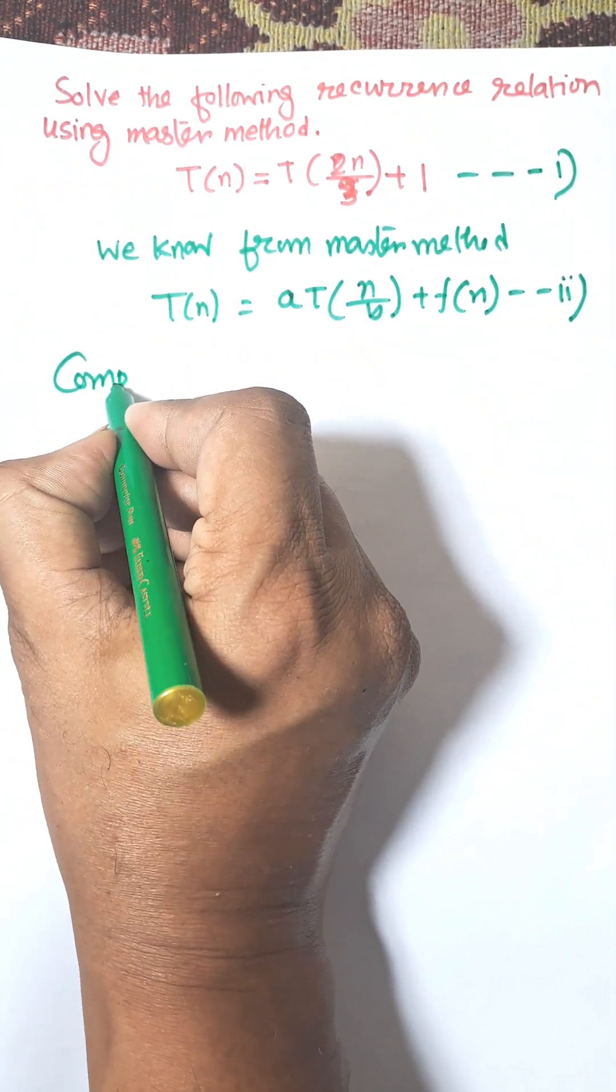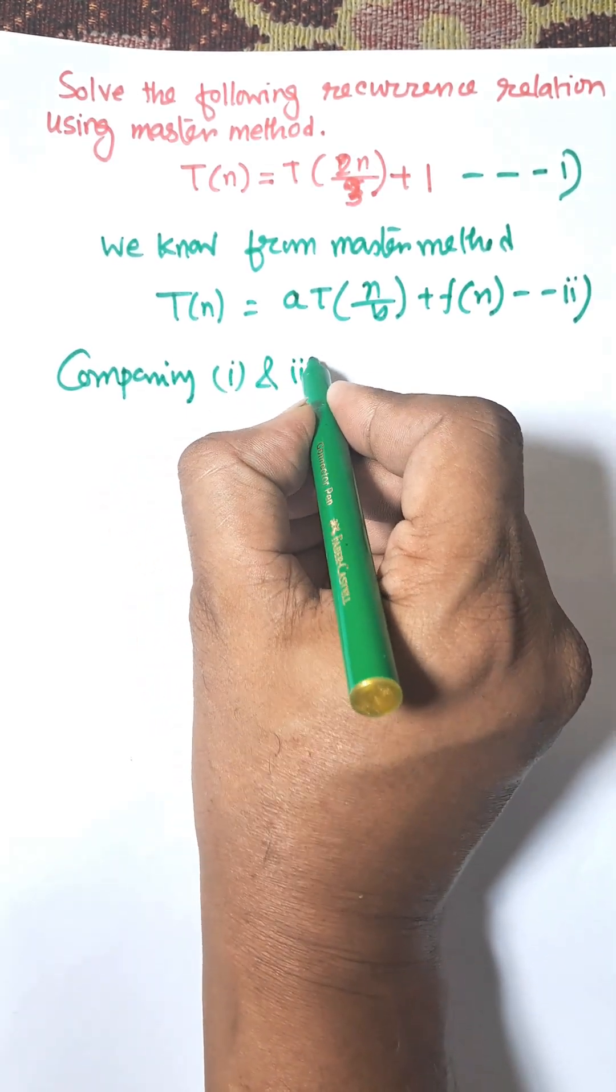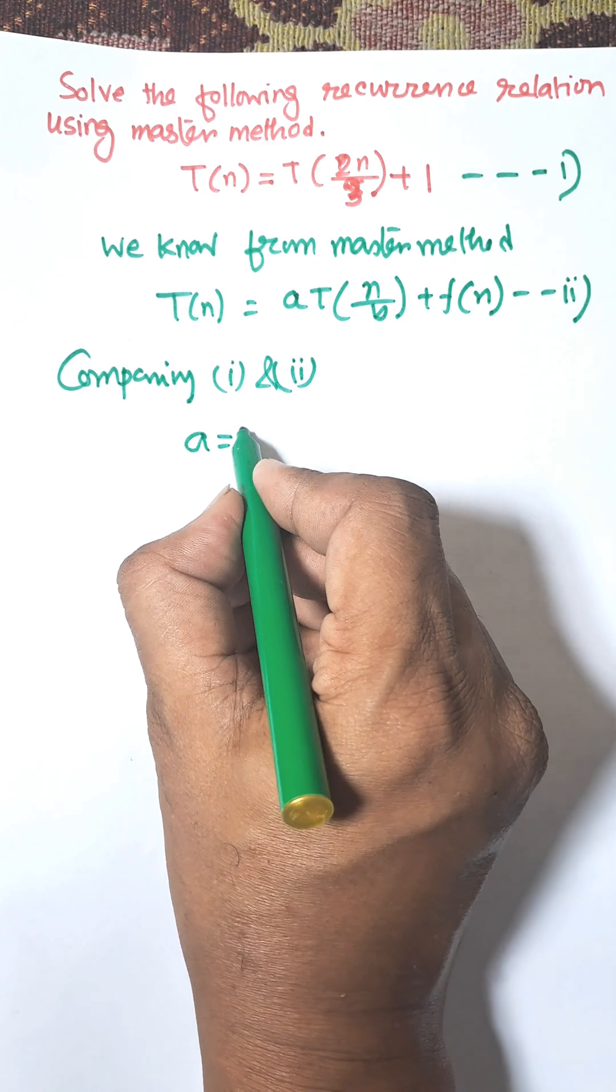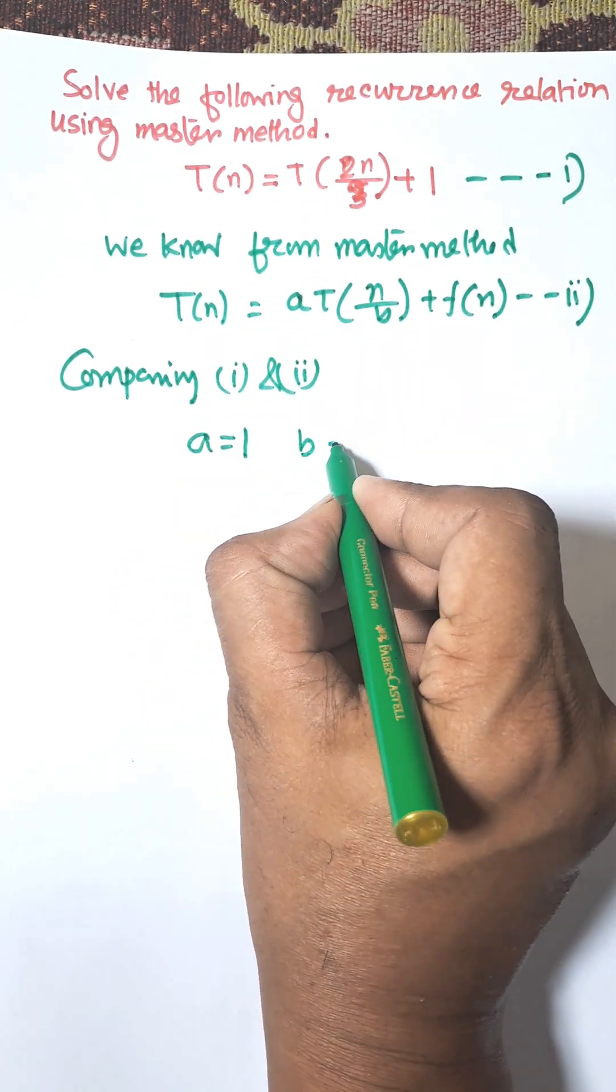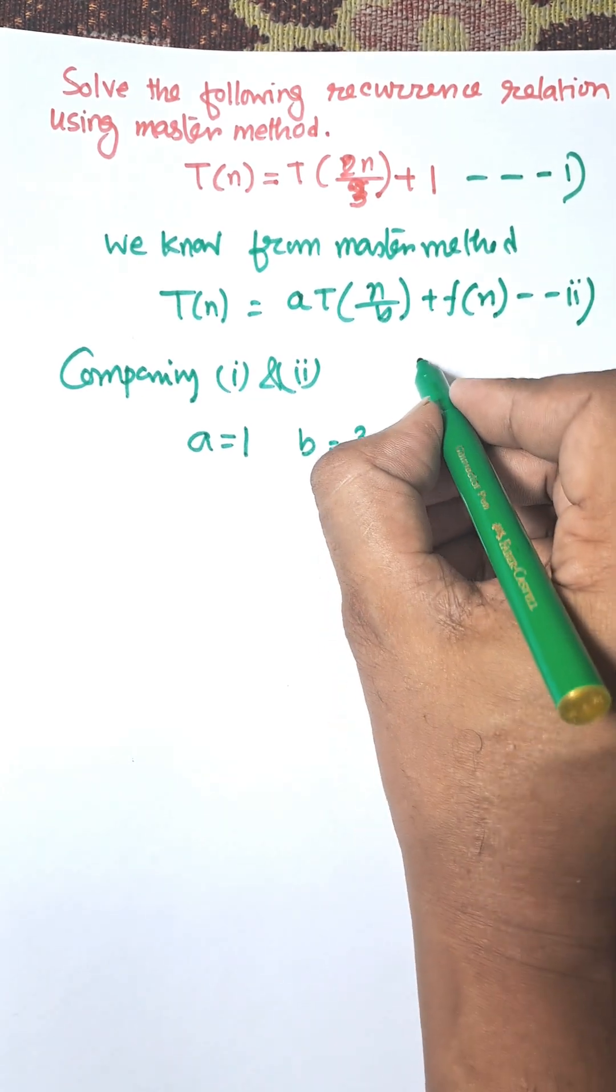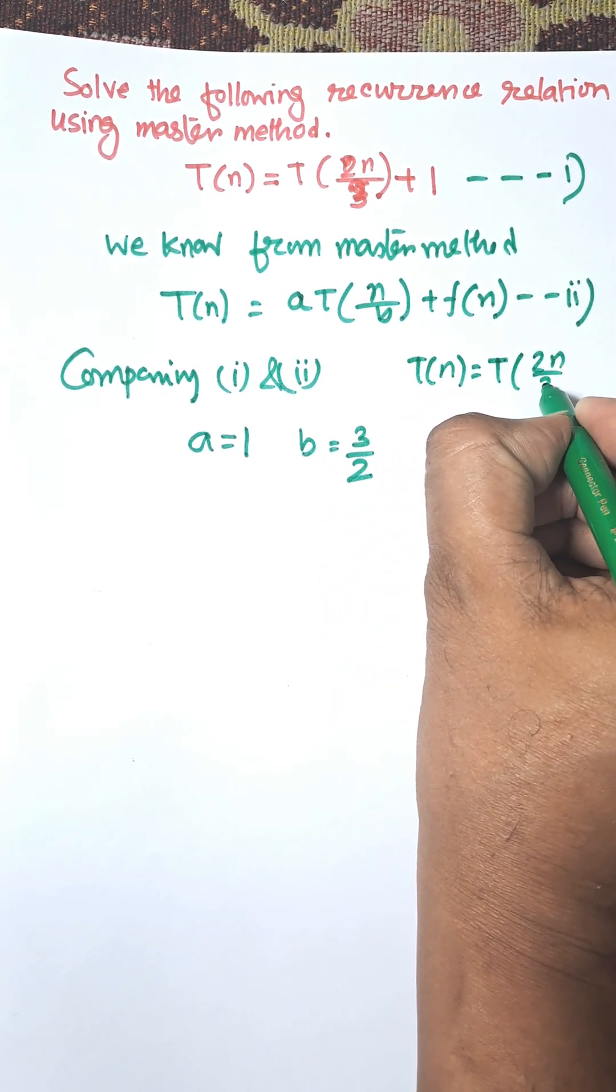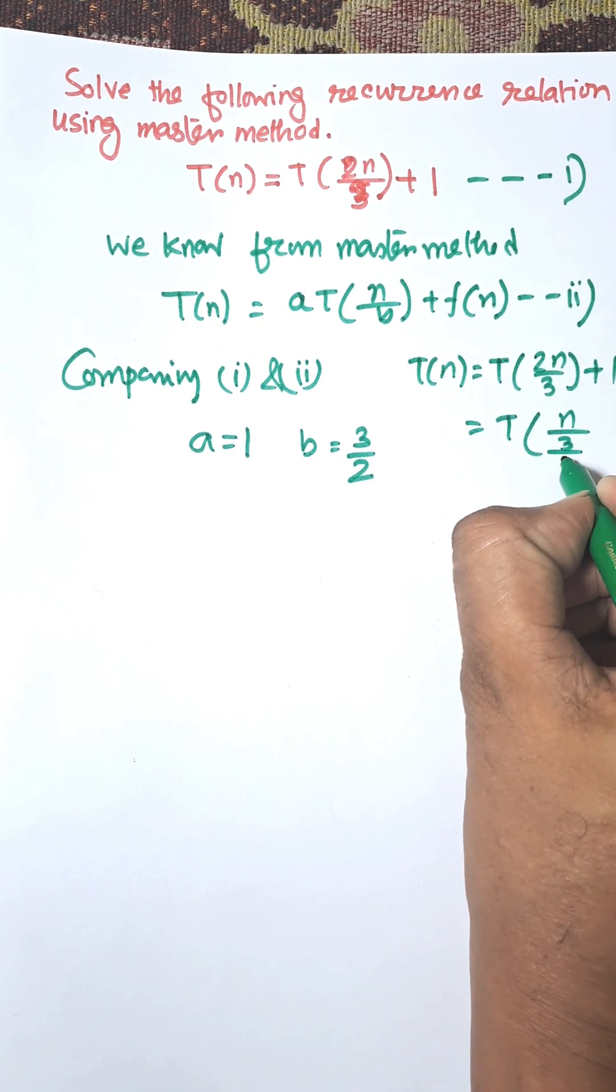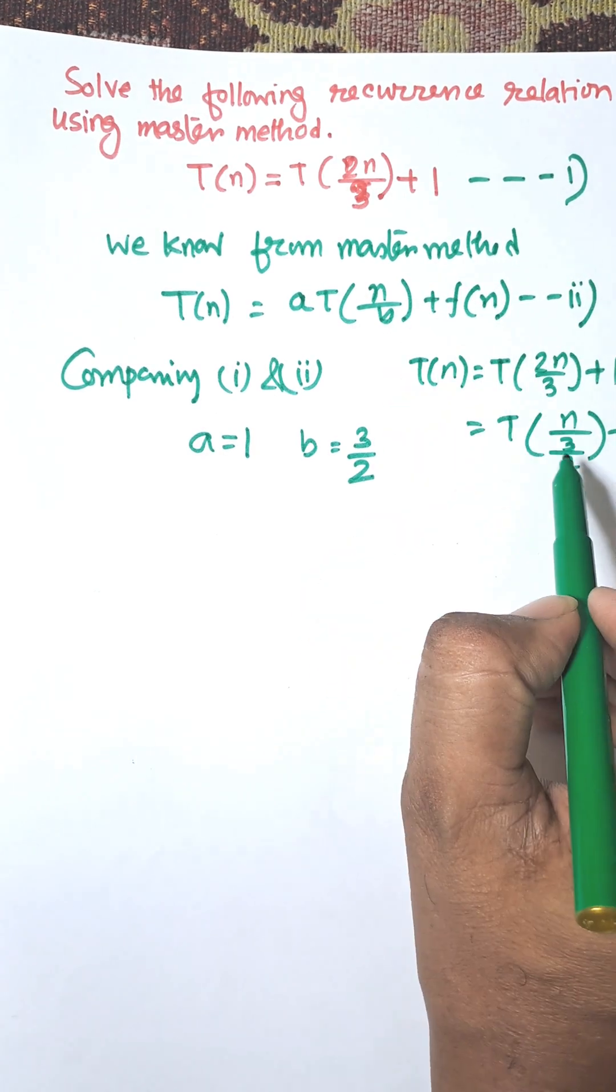Comparing 1 and 2, a equals 1, that is here a is 1 and b is 3/2. Why 3/2? This is here T(n) equals T(2n/3). So we need to convert as T(n/(3/2)) + 1. So comparing 1 and 2 we get b equals 3/2.